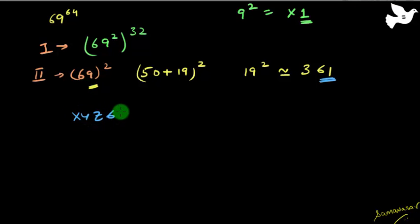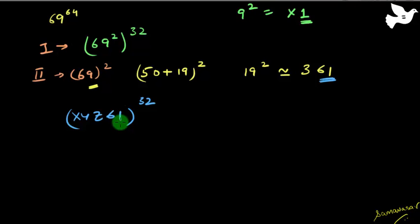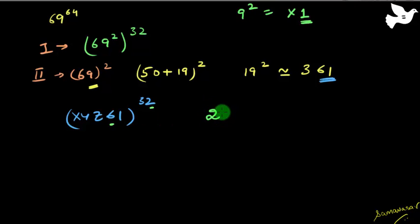So I know that this is a number of the kind xyz...61, raised to the power 32. This is good enough, because whenever we have a number ending in 1 and we are trying to find the last 2 digits, all we need to do is take the tens digit multiplied by the units digit of the power. 6 times 2 is 12 — so that gives 2 — and the units digit remains 1. So the last 2 digits of this expression are 21.